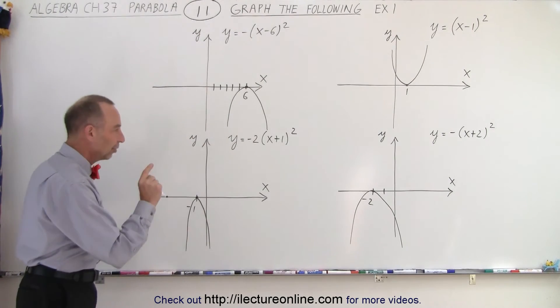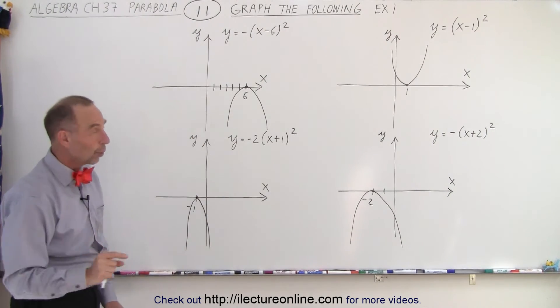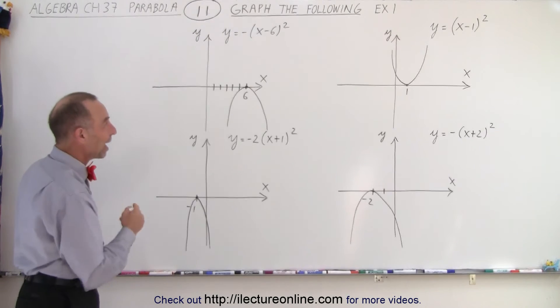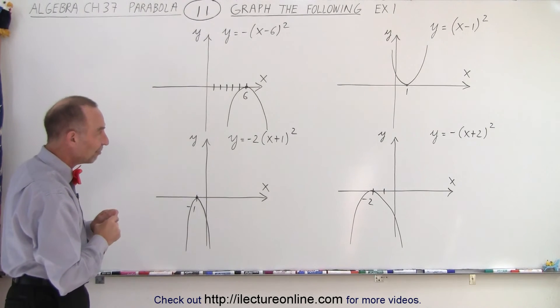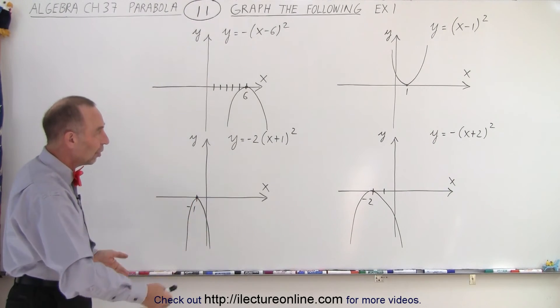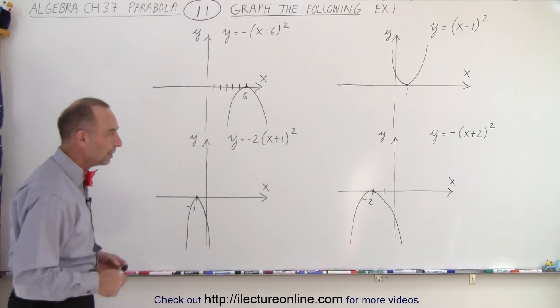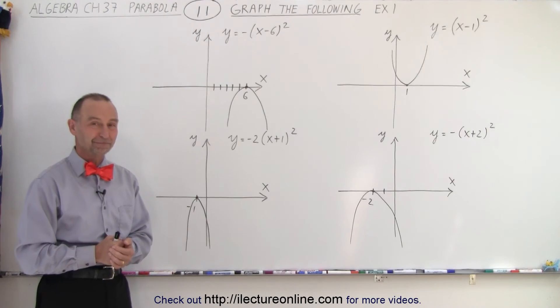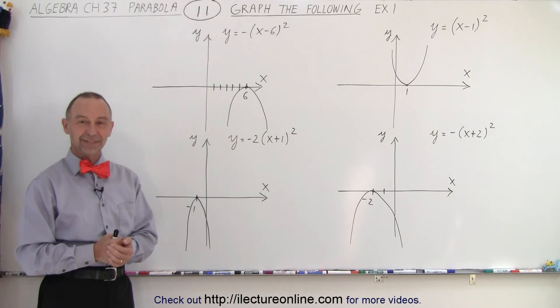That is how you quickly graph these four examples, by simply looking at the shift, looking at the plus or minus sign in front, and checking if there's a constant, which would move it up or down. And that is how it's done. Nice and quick.